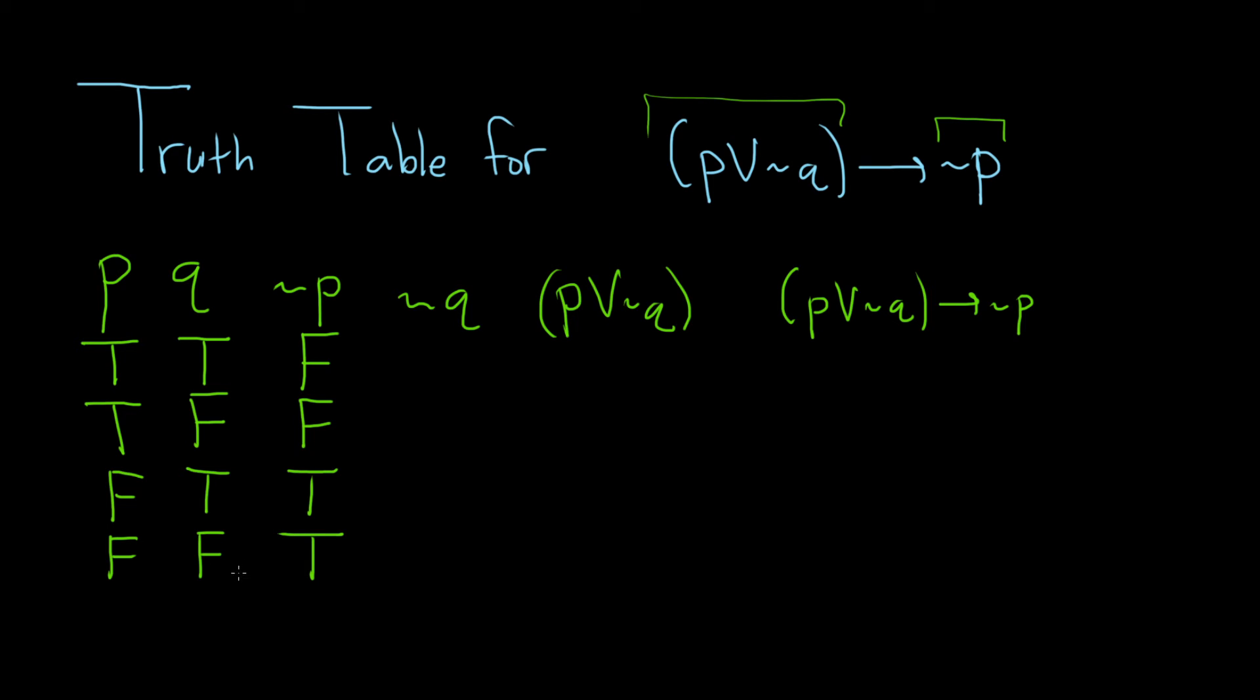The same thing for not Q. We look at the column for Q and switch the truth values. So true becomes false. False becomes true. True becomes false. And false becomes true.